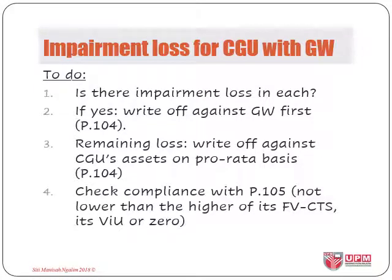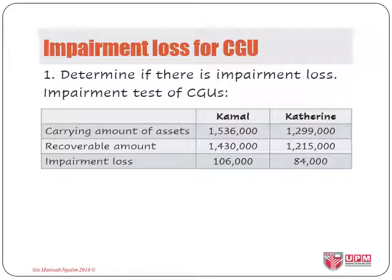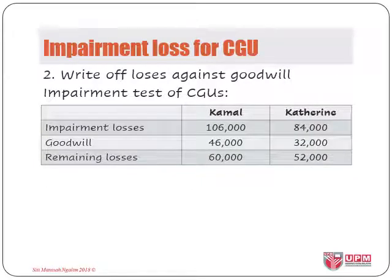We then check whether the reduced amounts comply with the requirements in paragraph 105. Based on paragraph 76, the carrying amount shall include all rightly attributable assets that contribute to the cash flows of the CGU and exclude liabilities. So we take the carrying amounts of both CGUs without liabilities — $1.536 million for Kamal and $1.299 million for Catherine. Comparing with the recoverable amounts, both units are impaired at $106,000 for Kamal and $84,000 for Catherine. The next step is to write off the losses against goodwill first, leaving a balance of $60,000 for Kamal and $52,000 for Catherine.